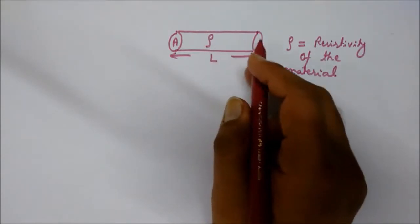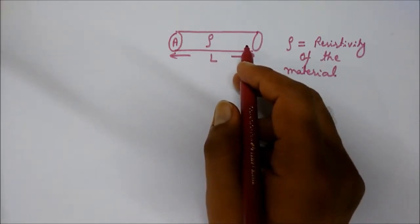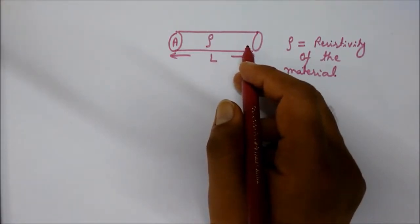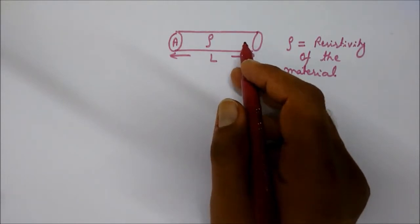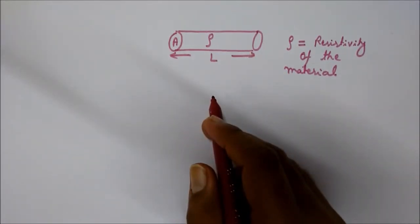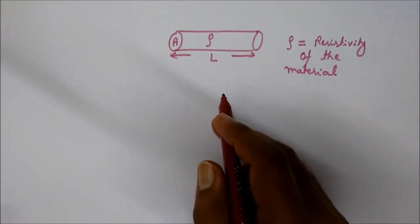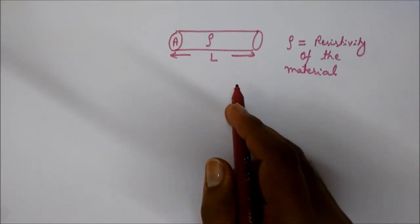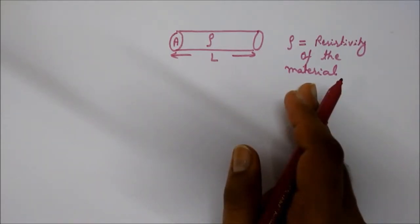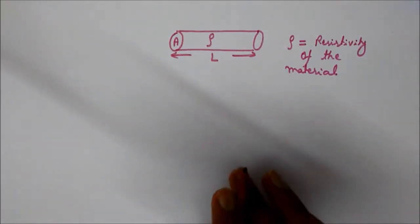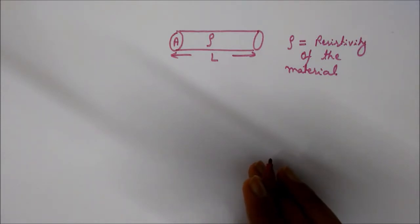The resistivity depends on the property of the material and is unique for different materials. As we know, a resistor causes resistance or obstruction in the free flow of charged particles — that is, the electrons. This is because of the collisions of free electrons with the ions of the conductor.